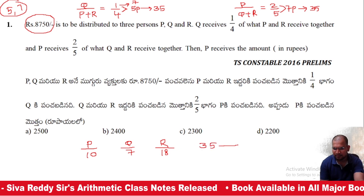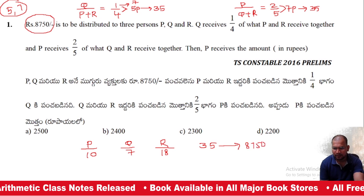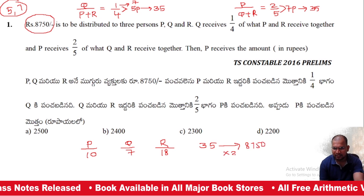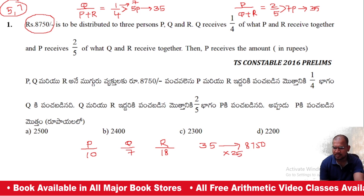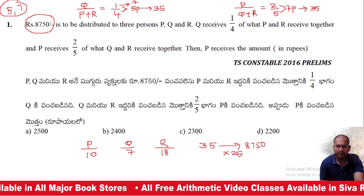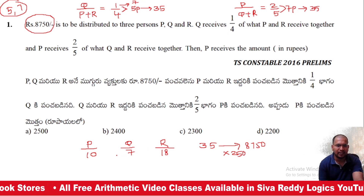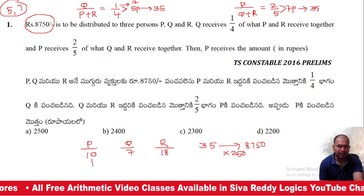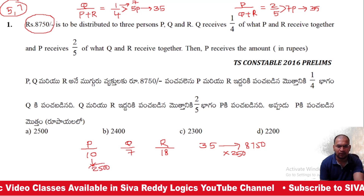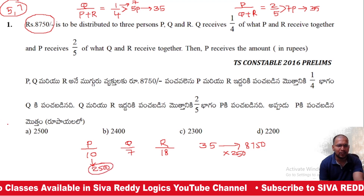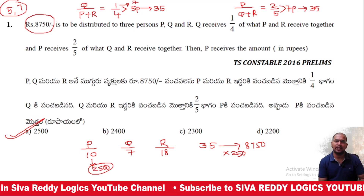The total 35 parts value is 8,750. 35 times 250 equals 8,750 exactly, so each part is 250. P has 10 parts: 10 into 250 equals 2,500. P is 2,500. Option A will be the right answer.